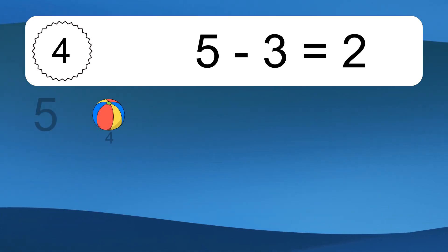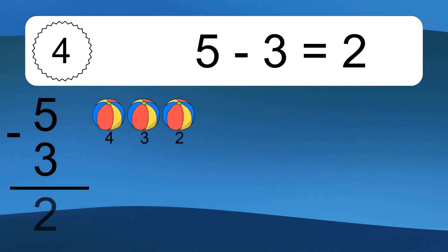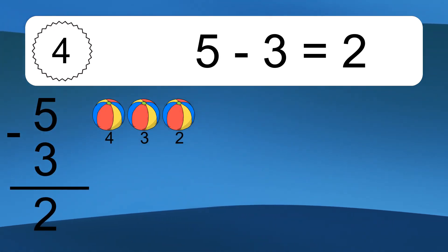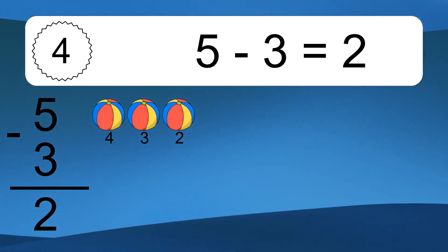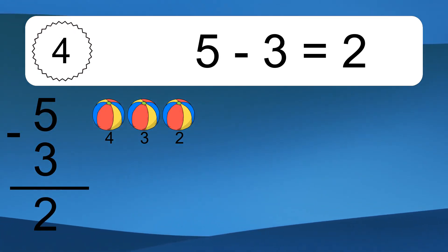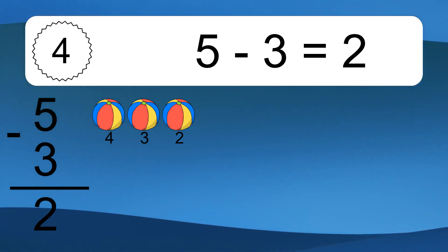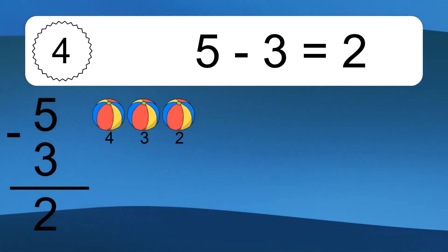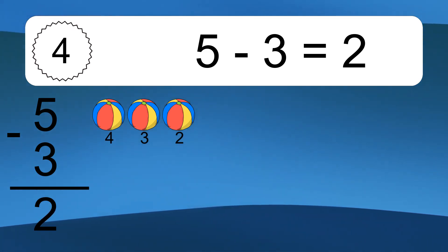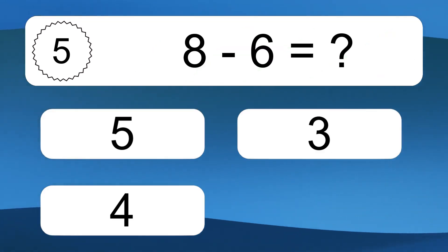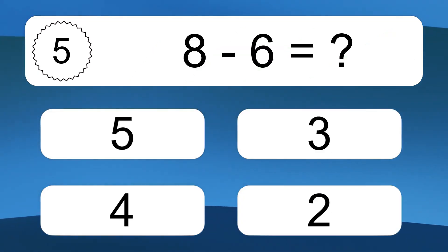5 minus 3 equals what? 5 minus 3 equals 2. Let's count it. 4, 3, 2.